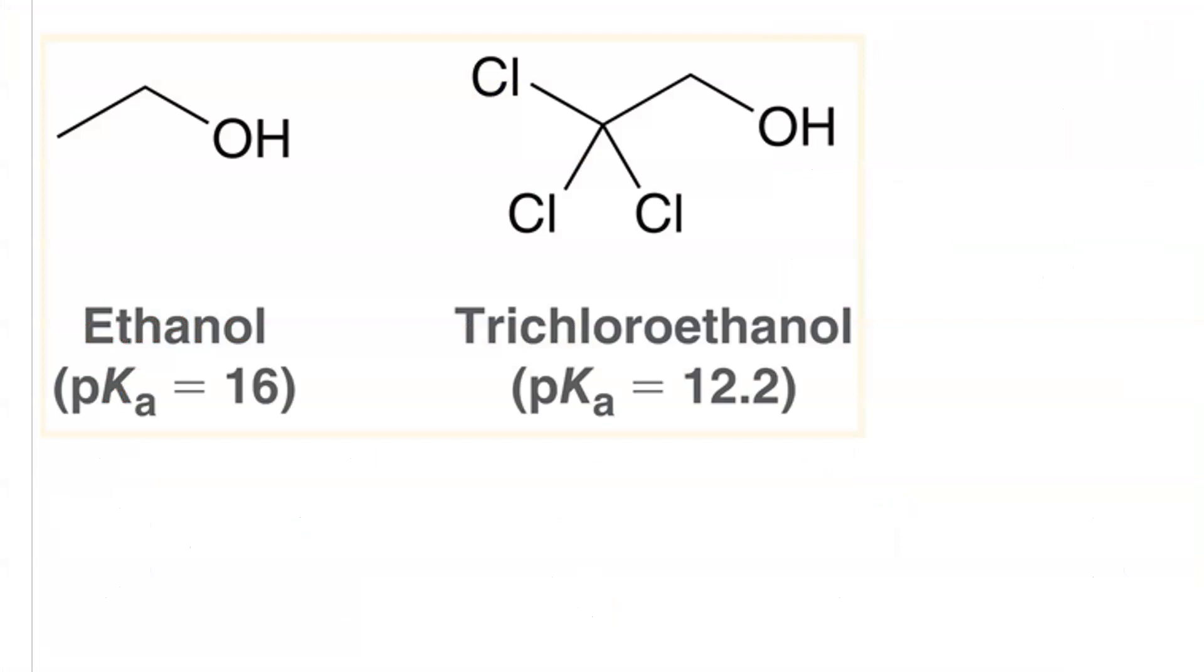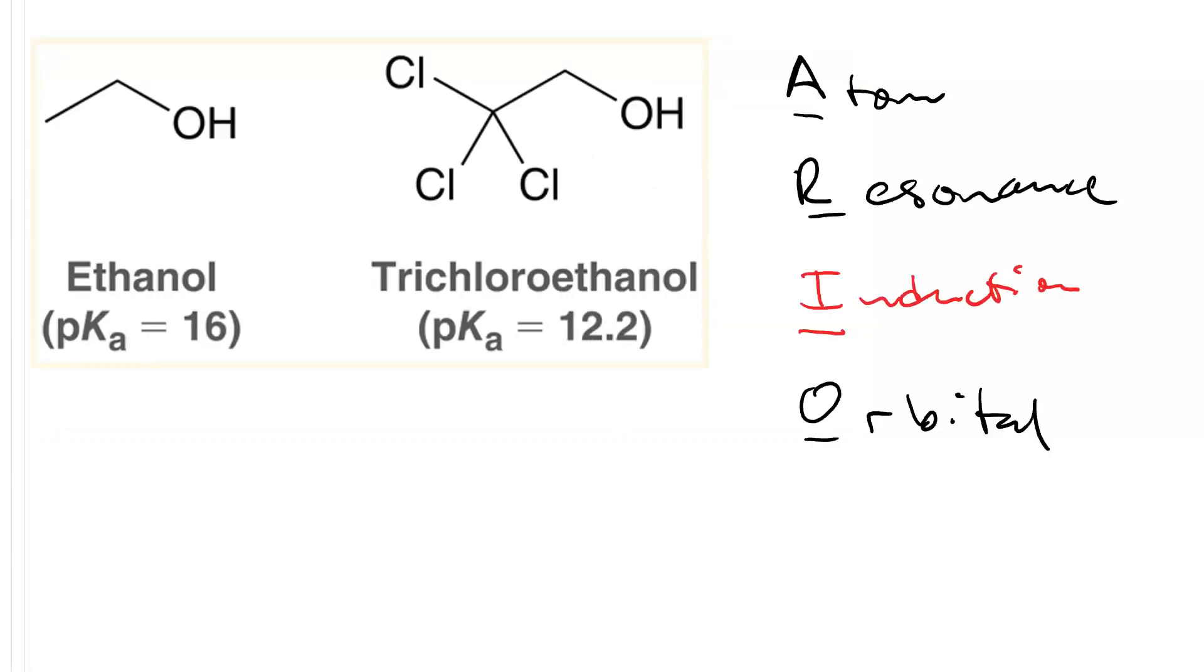Trichloroethanol is almost 10,000 times more acidic than regular ethanol. Why is that? Well, the I in ARIO stands for induction. The presence of these electronegative atoms creates induction that pulls away electron density from the oxyanion stabilizing that oxyanion. That means trichloroethanol is more likely to give up its proton than ethanol is.